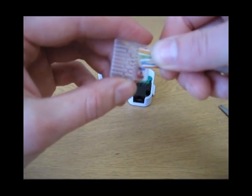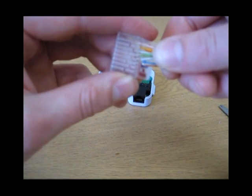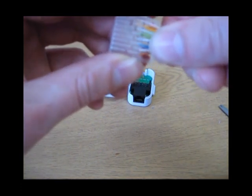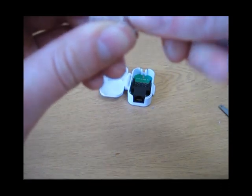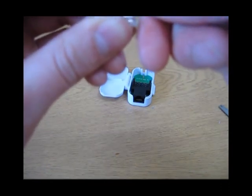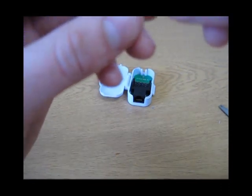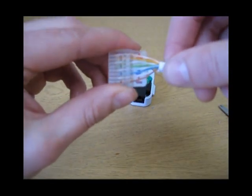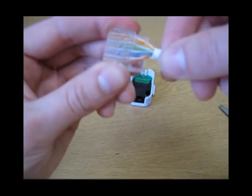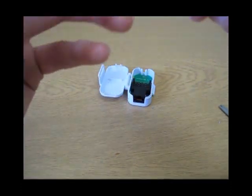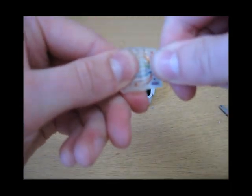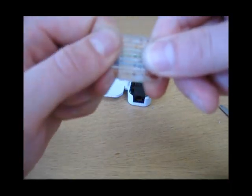Once you've got that you take the clip like so and insert the wires: white, orange, orange, white green, green, white blue, blue, blue white, brown, brown. We provide little cable cups which makes it easier to insert. Once you've got them in, push them all the way through until they reach the end, until the jacket is pushed all the way up.